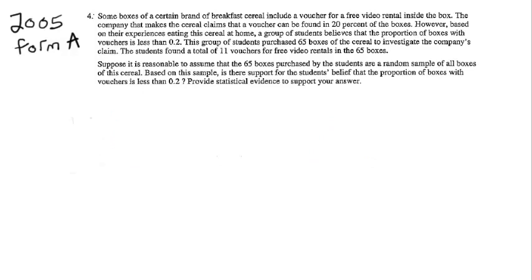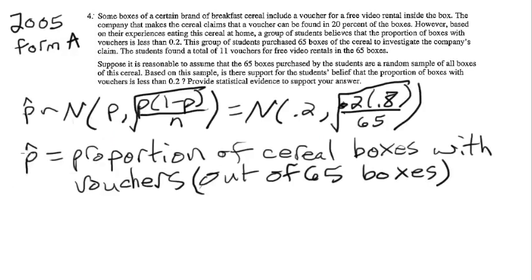And then we want to actually start doing some math. We should probably say what p hat is in this case, define what our sample proportion is here. So it's the proportion of cereal boxes with vouchers out of our 65 randomly selected boxes. And then we should probably talk about what is the distribution of all of the possible p hats look like, what are the properties of the sampling distribution.